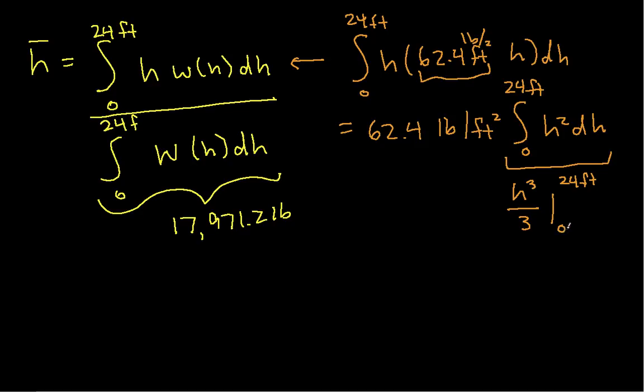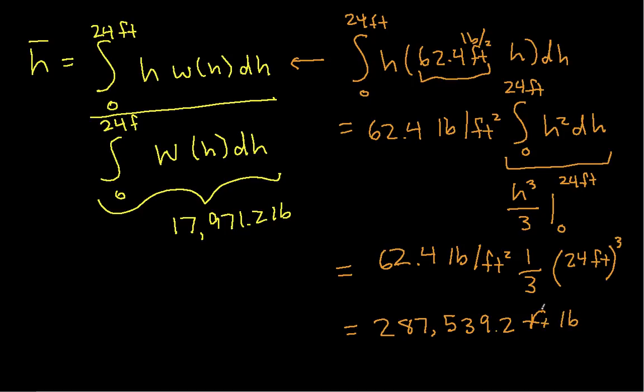Evaluating this at 0 gives nothing, so I'm just going to have this value plugged in for h. So then combining this, I get 62.4 pounds per square foot times one-third times 24 feet cubed. And when I work this whole thing out, I get 287,539.2 foot-pounds.